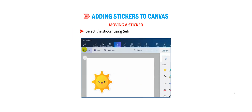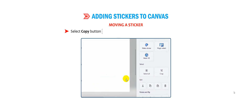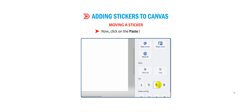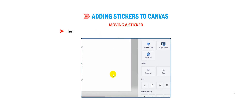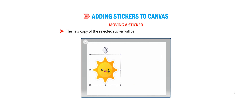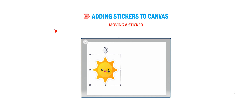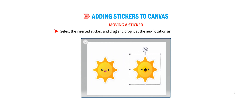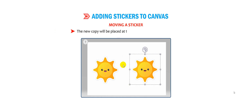Select the sticker using the select tool from the top menu. Select the Copy button under the Edit option from the 2D selection panel. Now click on the Paste button — the new copy of the selected sticker will be placed over the pre-existing sticker. Select the inserted sticker and drag and drop it to the new location as shown in the figure. The new copy will be placed at the desired location on the canvas.